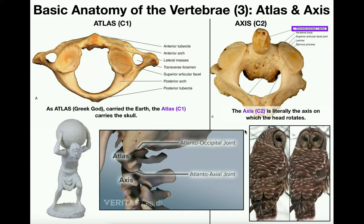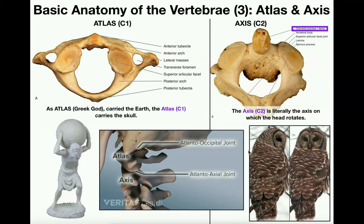C2 is called the axis — think axis of rotation. It sits right under the atlas, and its odontoid process, also called the dens, sticks upward through a hole in the atlas. This forms the atlantoaxial joint, which allows you to rotate your head side to side — like saying no. An owl can rotate its head almost 360 degrees — that's a very mobile atlantoaxial joint. For this bone, you need to know it as the axis and be able to identify the odontoid process and the dens.